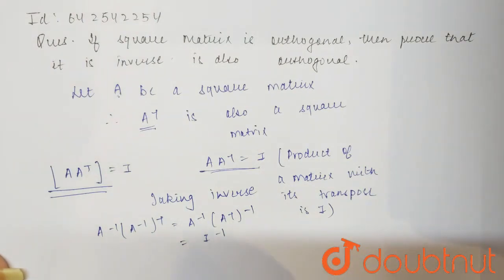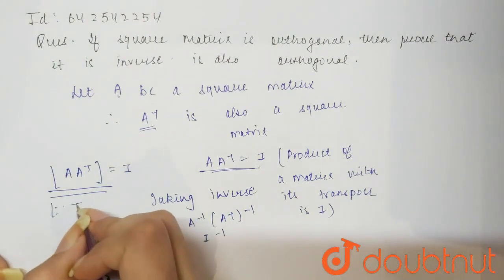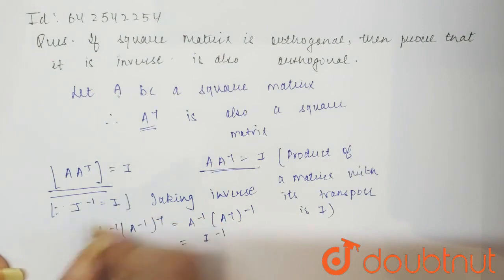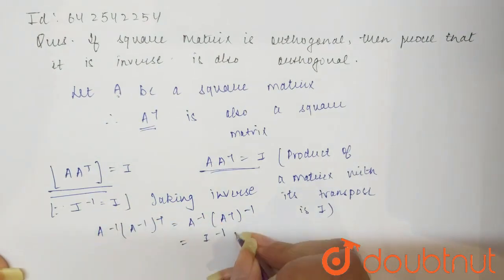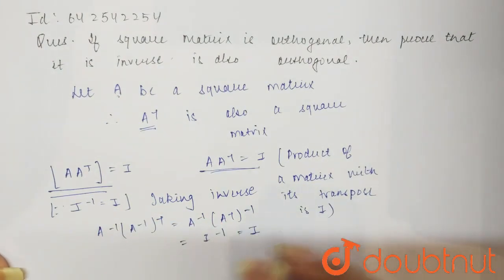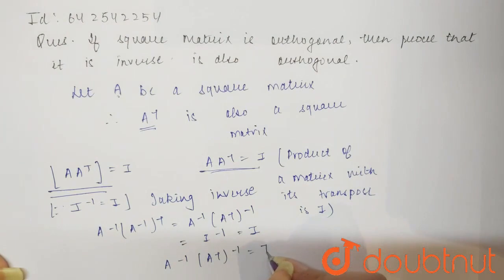Now what is I inverse? We know that inverse of identity matrix is also identity matrix. That means I inverse equals I. That means we can say that A inverse times A T whole inverse equals I.